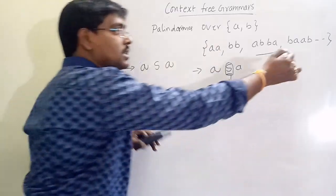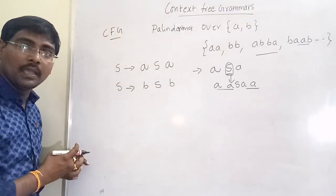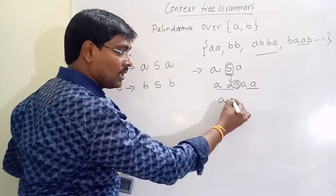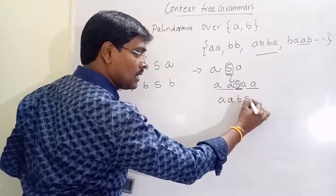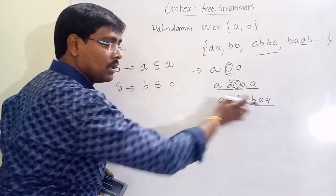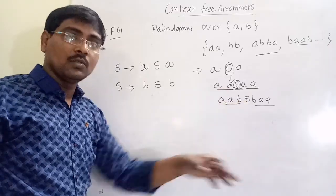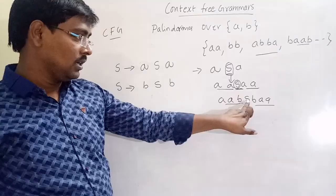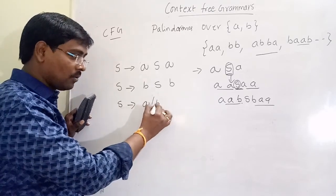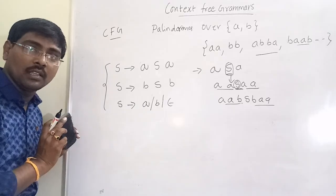If the palindrome starts with B, then S tends to B S B. Either it starts with A or starts with B. For example, replacing S with B S B and then A A gives B A A B — which is also a palindrome. We stop when we generate a string of all terminals only. Finally, S is replaced with a single alphabet A, B, or Epsilon. This is the procedure for generating palindromes.